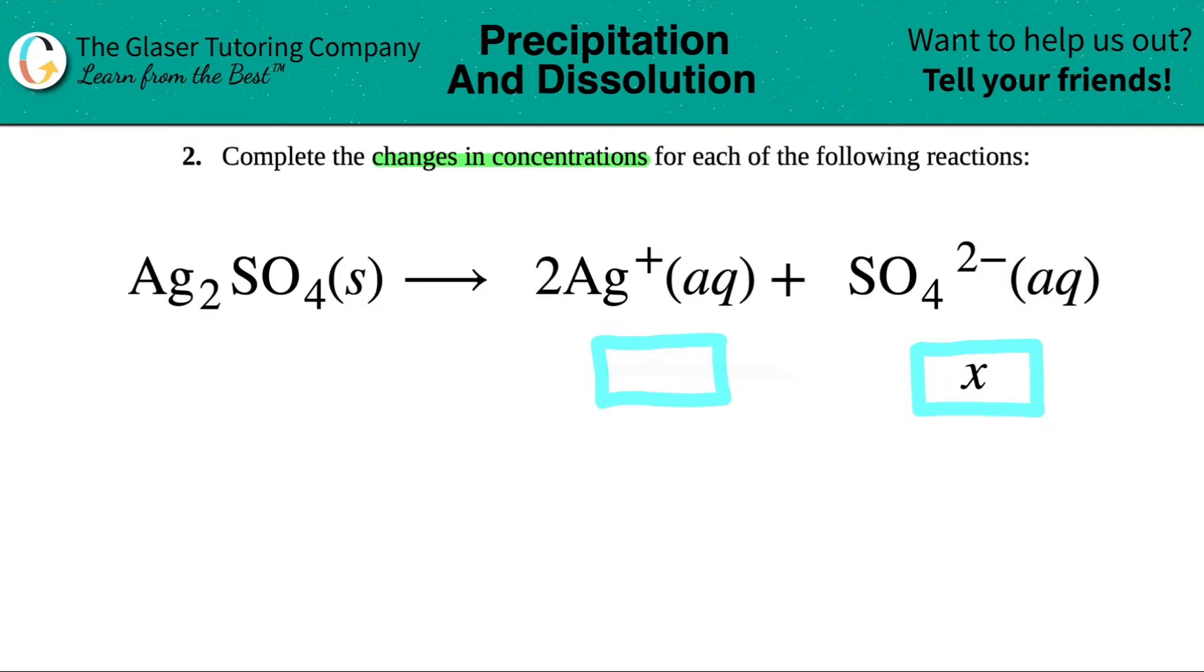Now the question is, if they label the sulfate, the SO4 2-, as changing in an X concentration, what would be the change in the Ag+ concentration?